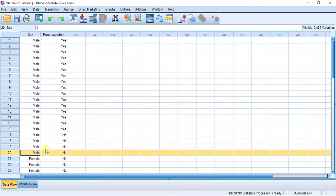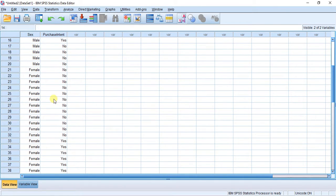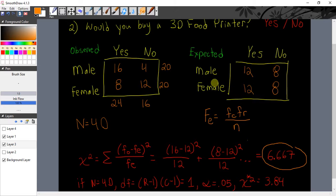If I go to my data view, you can see here I have 40 individuals, 20 males and 20 females. We have 16 males that say yes, 4 males that say no. And then we have 12 females that say no and we have 8 females that say yes. Exactly the same as what we had here.